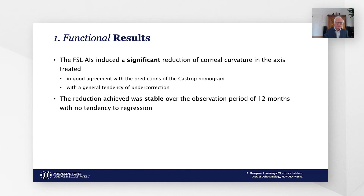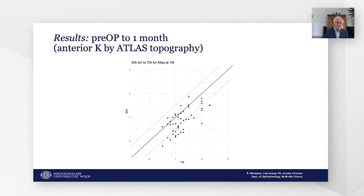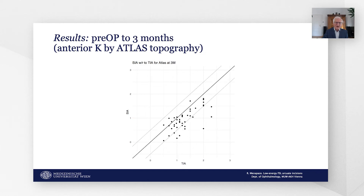Functional results: the femtosecond laser arcuate incisions induced a significant reduction of corneal curvature in the axis treated, in good agreement with the predictions of the CAST-DROP nomogram and with a general tendency of undercorrection. The reduction achieved was stable over the observation period of 12 months with no tendency to regression. When plotting the achieved versus the targeted astigmatic correction, effective reduction increased with the amount of preoperative astigmatism, with a general tendency of undercorrection at one month and three months.